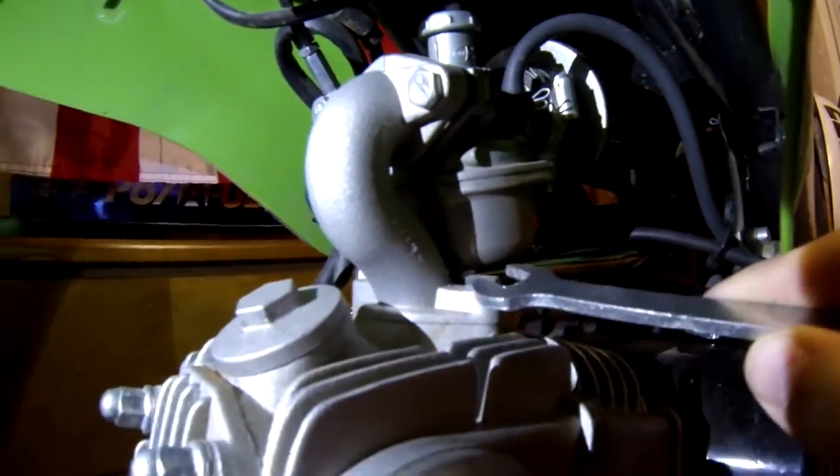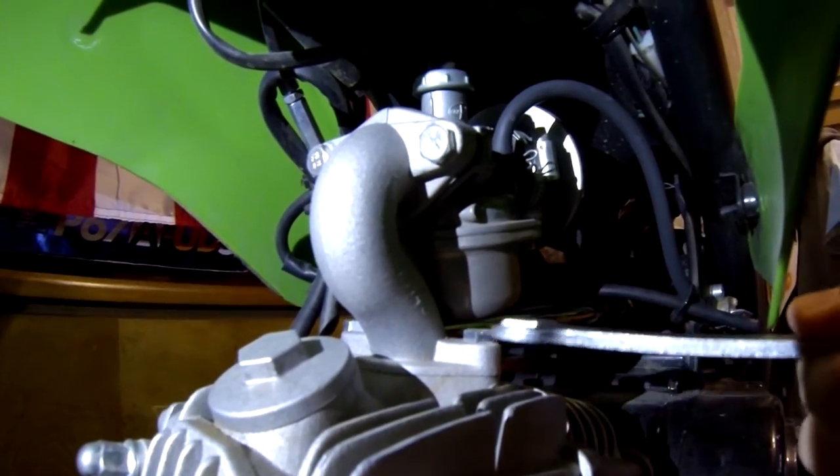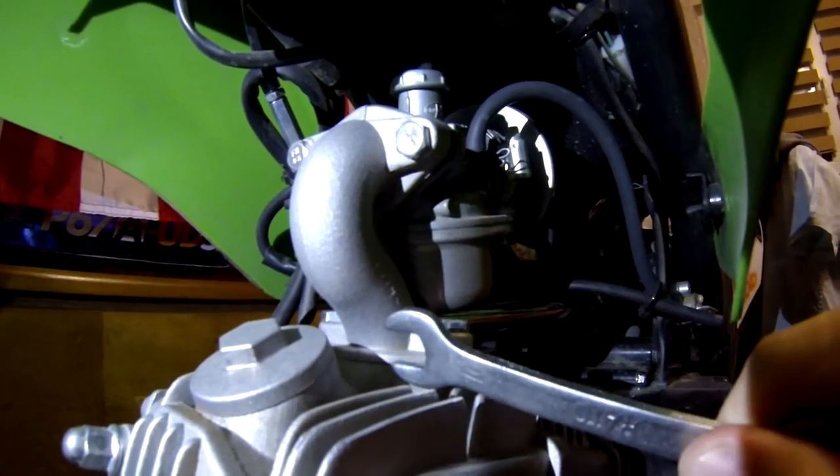We're going to need a number 10. As you can see, this is the carburetor, the little carburetor for the engine. There's a curved pipe, as you can see here, it's attached to the intake of the engine right here with two screws, one here and one on the other side.